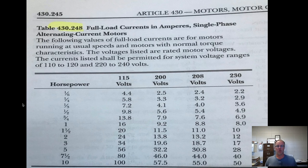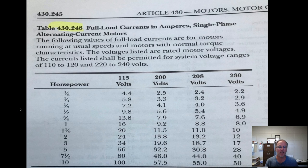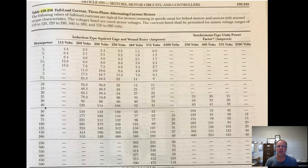Let's say we've got a one-horsepower motor at 115 volts — it's 16 amps. You go right to the table. It's real easy. You've got 115 volts, 200 volts (hardly ever used), 208 and 230. It goes up to 10 horsepower. This is the three-phase chart, Article 430-250.